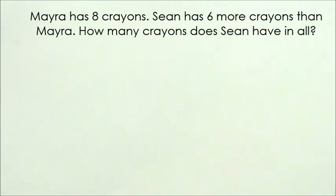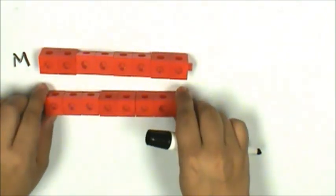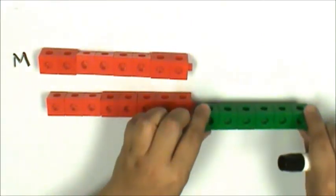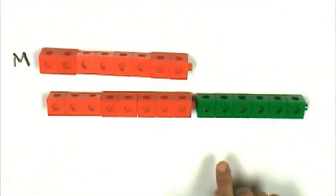First let's represent Myra's crayons. The problem says Sean had six more crayons than Myra. That means he had the same number that Myra had and then he had six more than Myra. So here's six more than Myra.